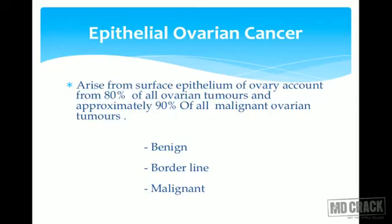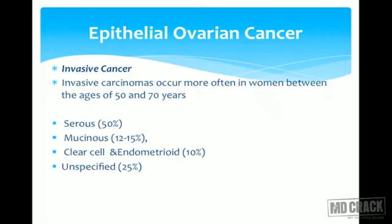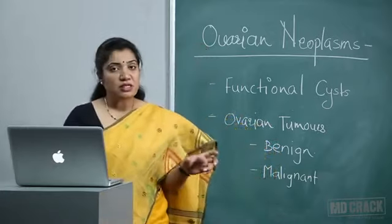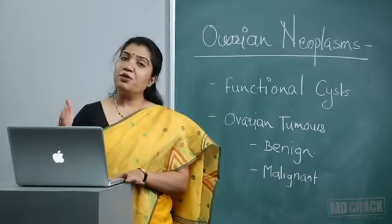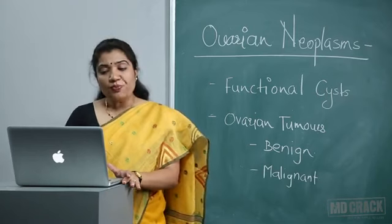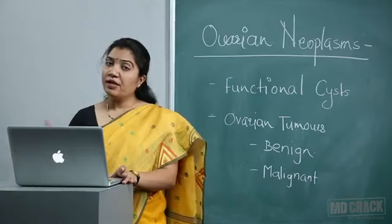Epithelial ovarian cancers arise from surface epithelium and account for 80–90% of all ovarian tumors; from malignant ovarian tumors, epithelial forms 90%. They are divided into benign, borderline, and malignant. Malignant invasive cancer occurs most often in women 50–70 years. Important varieties are serous, mucinous, clear cell, endometrioid, and unspecified. Serous cystadenoma is benign; serous cystadenocarcinoma is malignant. Mucinous cystadenoma is benign; mucinous cystadenocarcinoma is malignant.